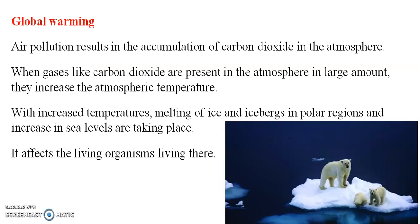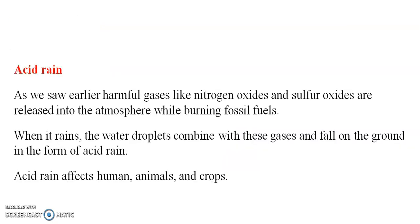Global warming: when gases like carbon dioxide are present in the atmosphere in large amounts, they increase the atmospheric temperature. The temperature increase causes icebergs in polar regions to melt and sea levels to rise. Acid rain: harmful gases like nitrogen oxide and sulfur dioxide are released into the atmosphere while burning fossil fuels. When it rains, water droplets combine with these gases and fall on the ground in the form of acid rain.